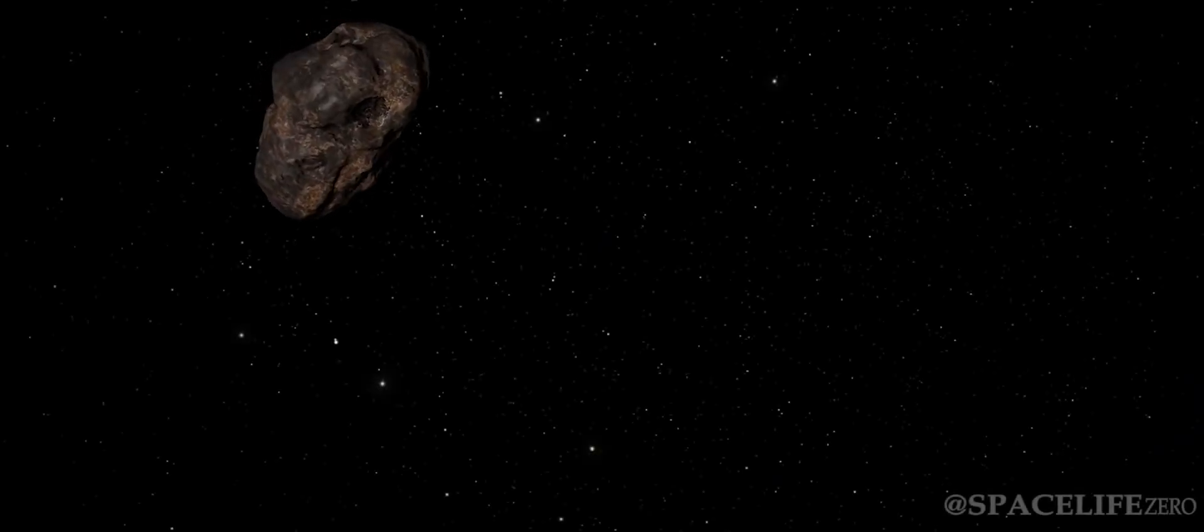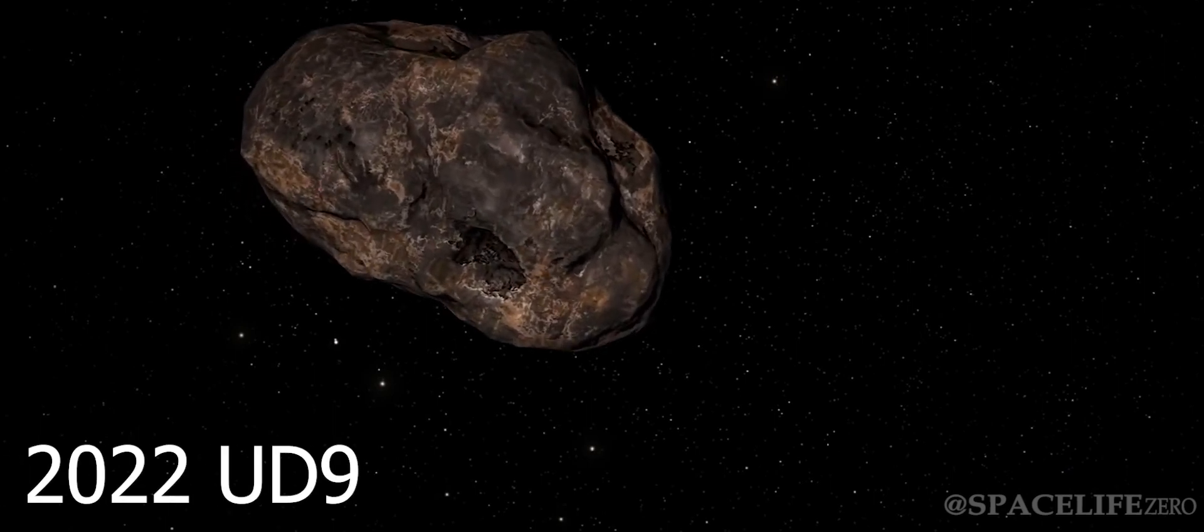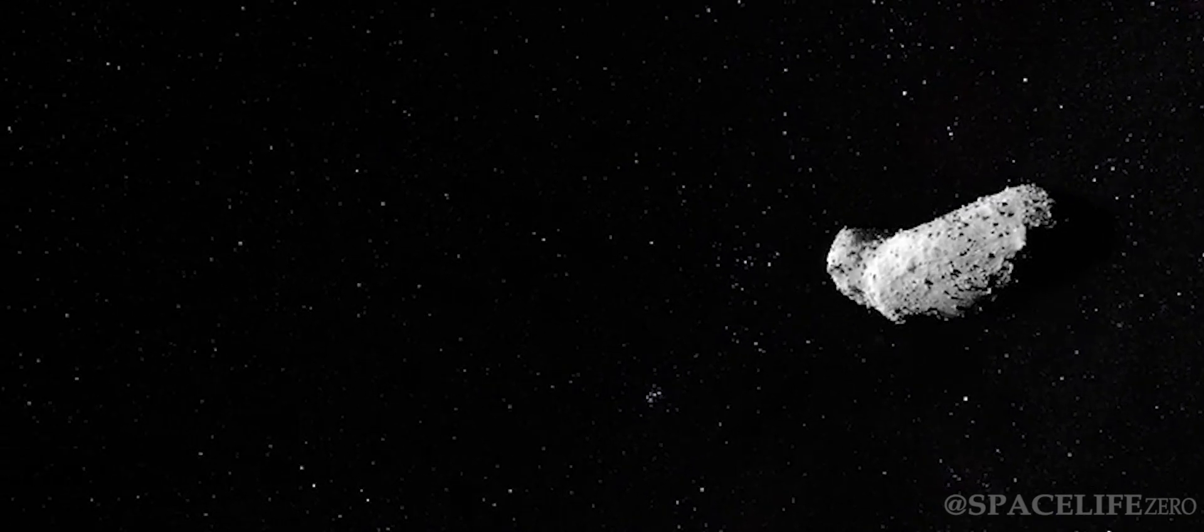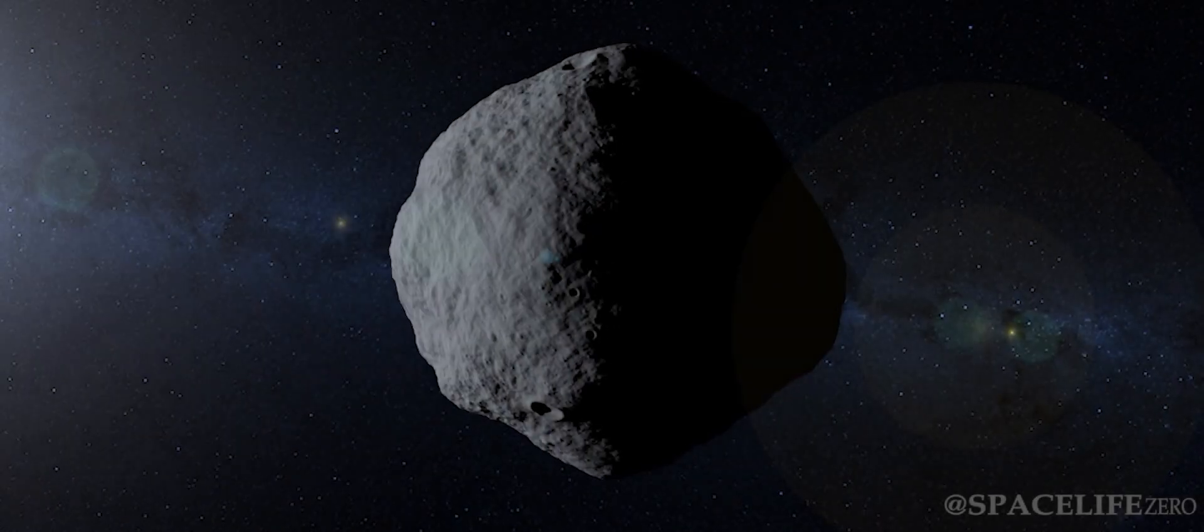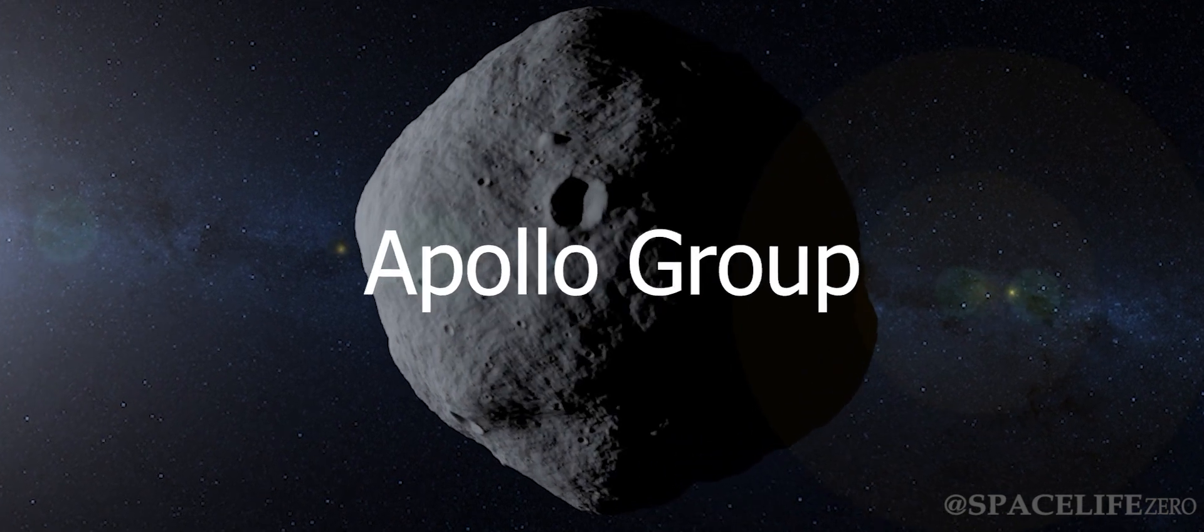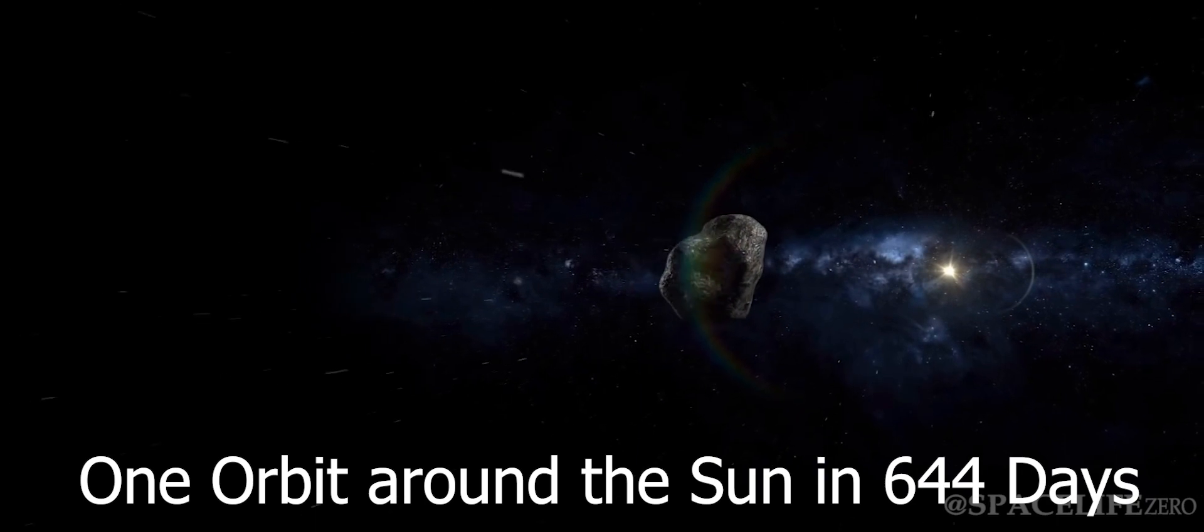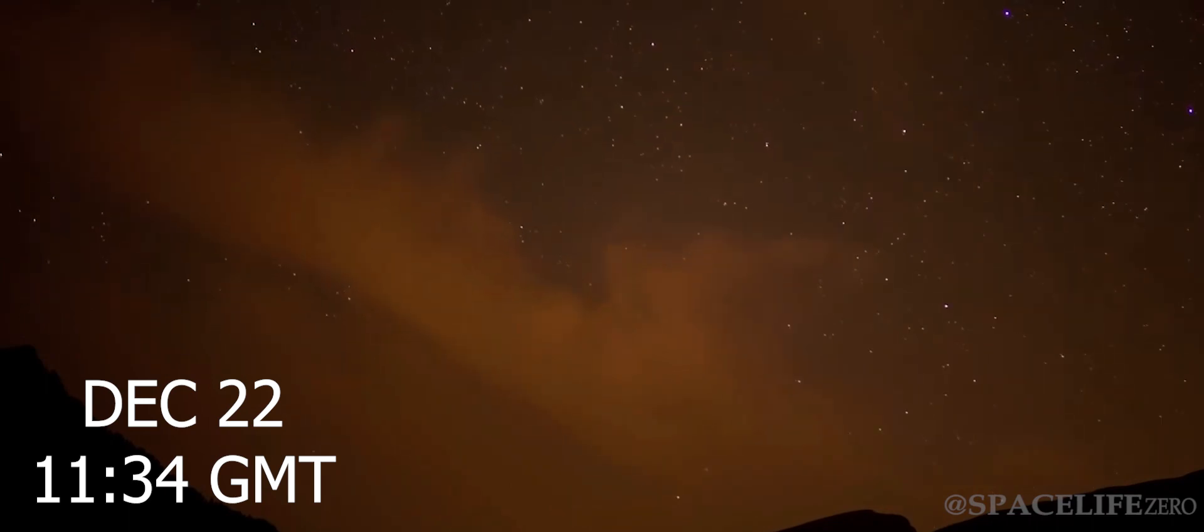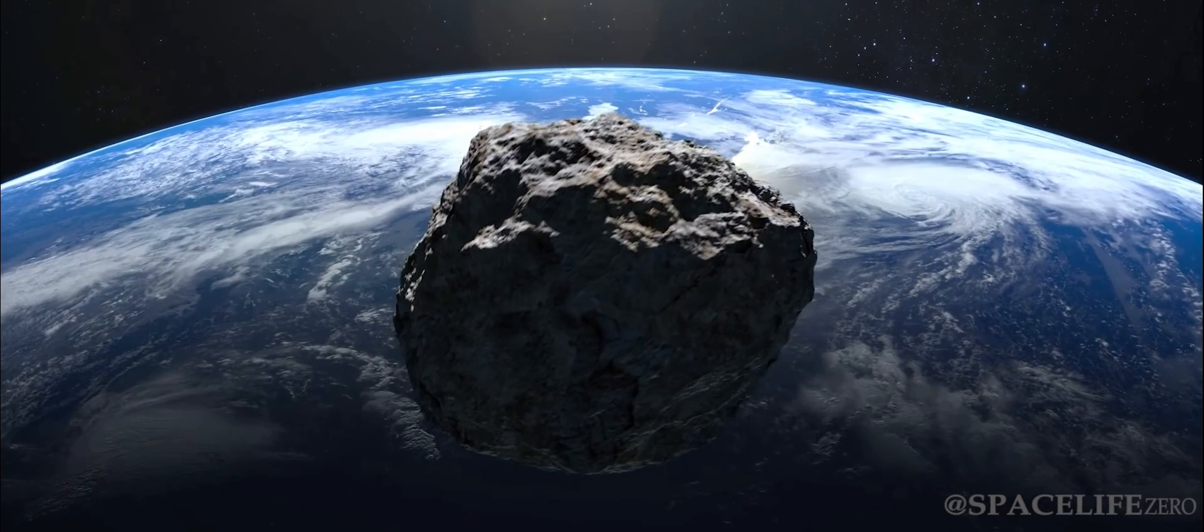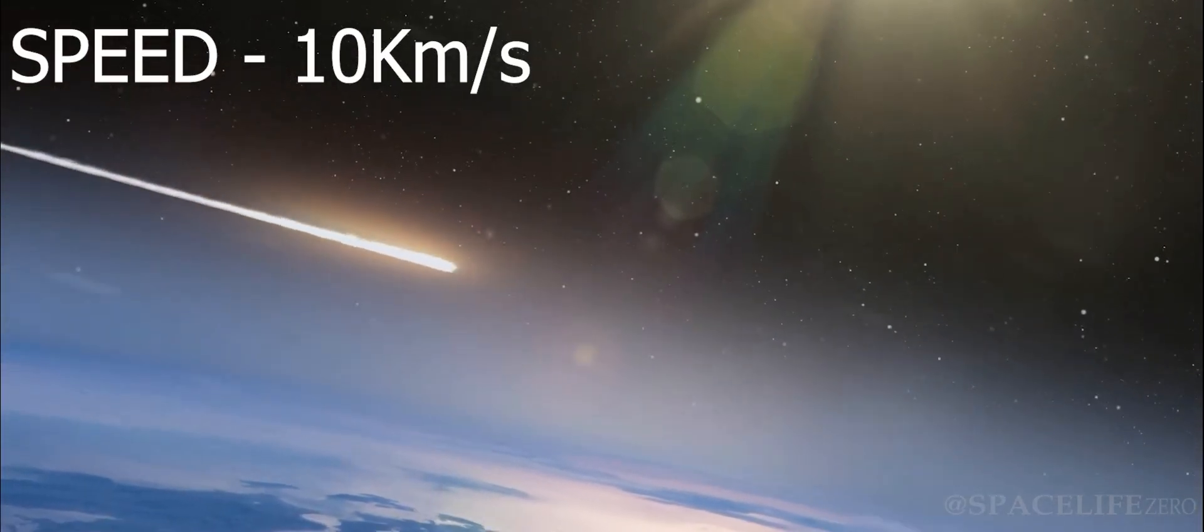The third asteroid which is considered as potentially hazardous is named Asteroid 2022 UD9. It was discovered on October 17, 2022, and it belongs to the Apollo Group. It makes one orbit around the Sun in 644 days. On December 22, at 1134 GMT, it will fly past Earth at a close distance of 1.78 million kilometers, at an incredible speed of 10 kilometers per second.